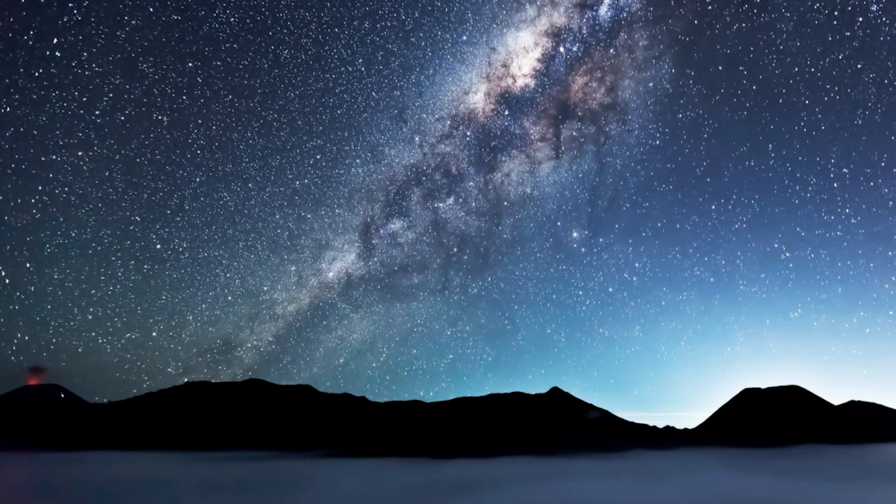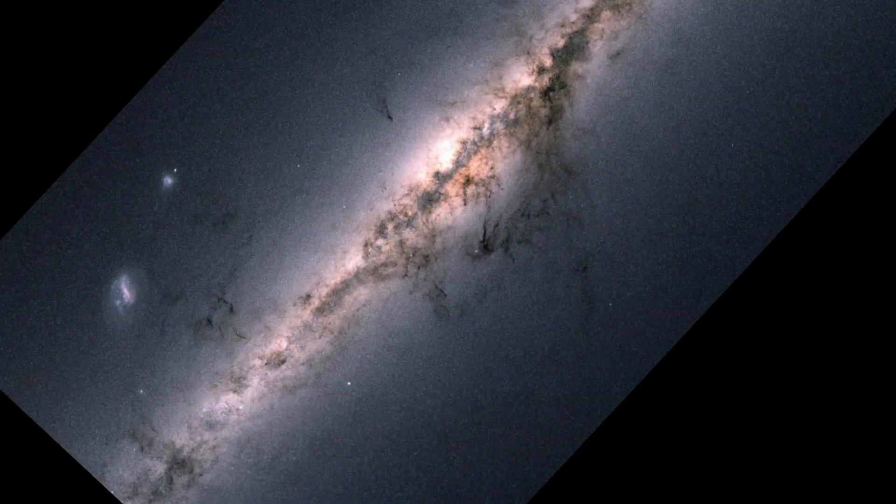You might recognize this image if you've ever seen the Milky Way on a clear night. From Earth, it looks like a bright band that stretches across the sky. But Gaia's map gives you the ability to zoom.